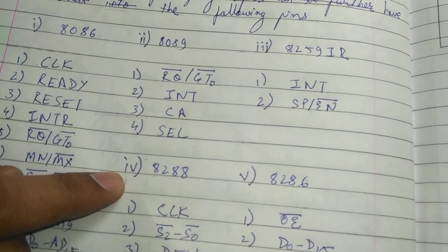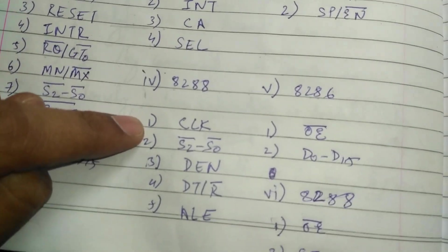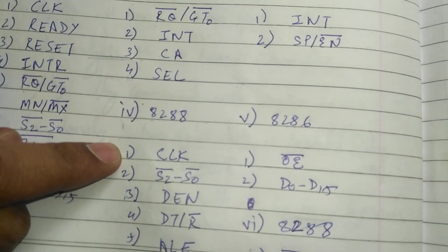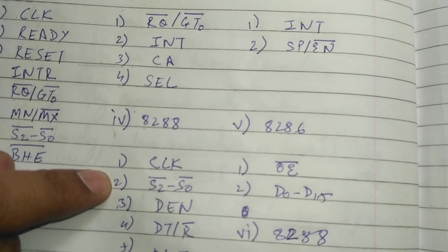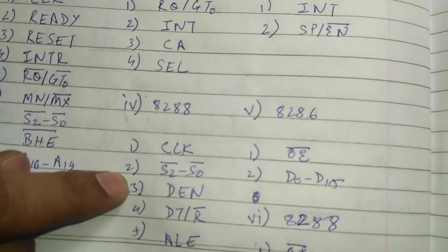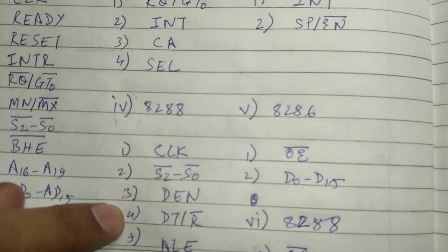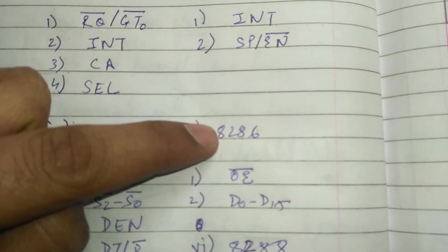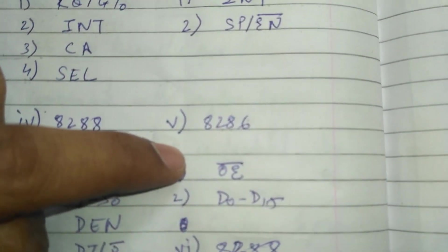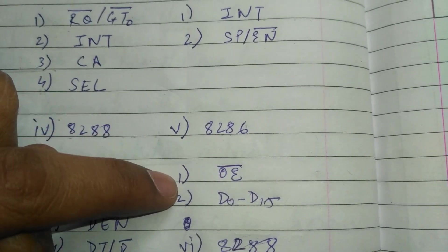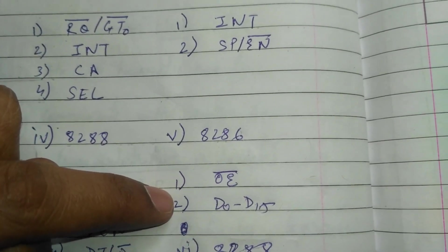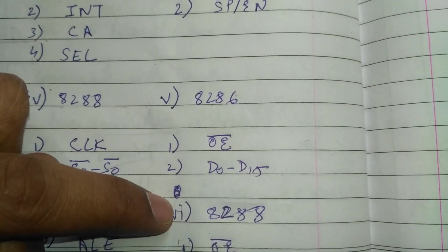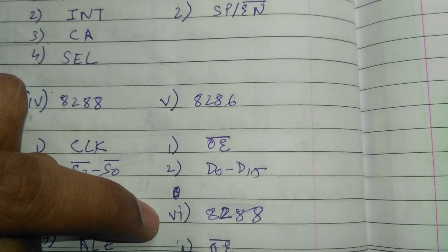Our fourth component is 8288; it has five pins. The first pin is CLK, the second pin is S2 minus S0 bar, the third pin is DN, the fourth pin is DT slash R bar, and the fifth pin is ALE. Our fifth component is 8286; its first pin is OE bar, the second pin is D0 to D15. Our sixth component is 8282.